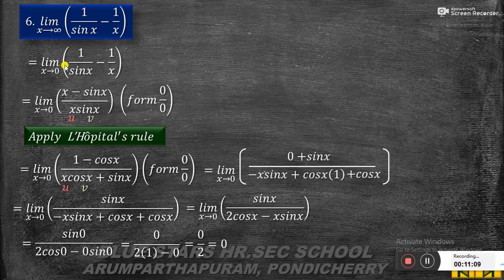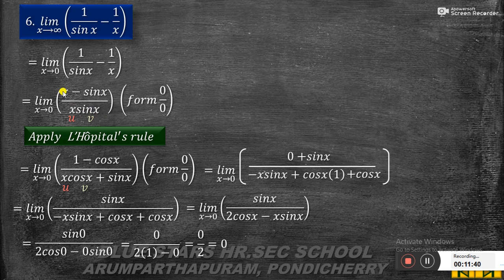The sixth problem: limit x tends to 0 of (1/sin x minus 1/x). Writing the given limit and taking common denominators: (x minus sin x) by (x·sin x). Substituting x equal to 0: numerator is 0 minus sin 0 = 0, denominator is 0 times sin 0 = 0. So we get 0 by 0 — an indeterminate form.